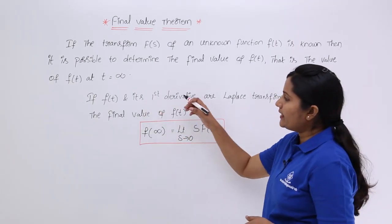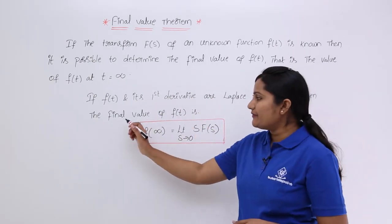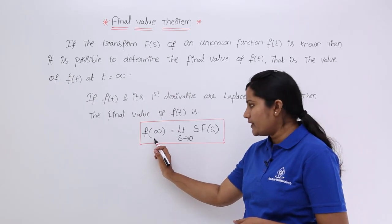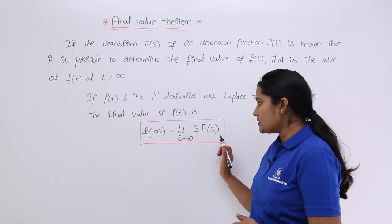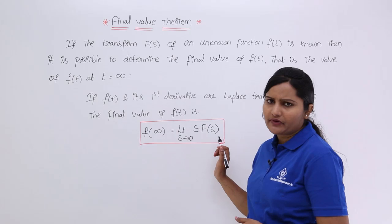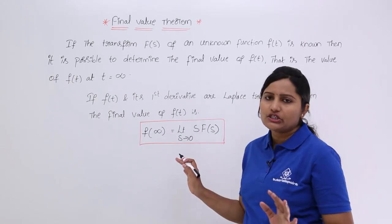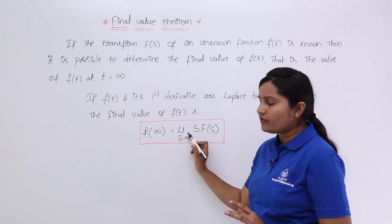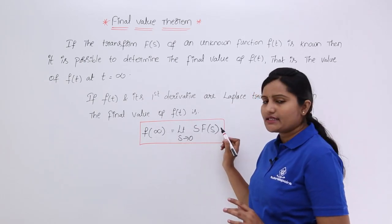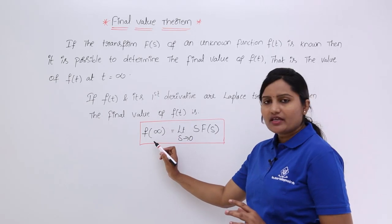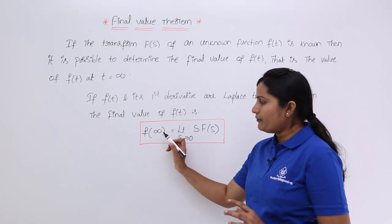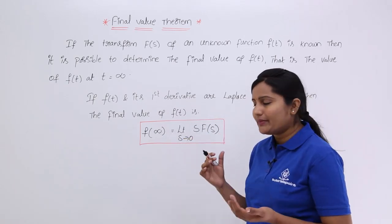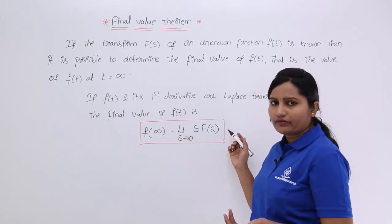If f(t) and its first derivative are Laplace transformable, then the final value of f(t) is defined as: f(∞) = limit as s tends to 0 of s·F(s). This is similar to the Initial Value Theorem, where f(0⁺) = limit as s tends to infinity of s·F(s). Here for the final value, f(∞) = limit as s tends to 0 of s·F(s).